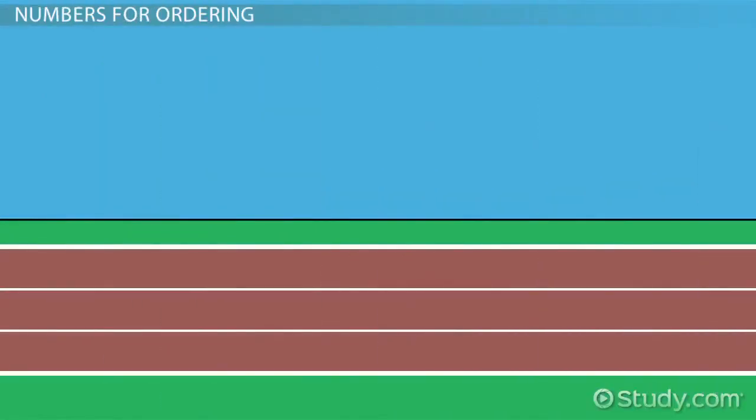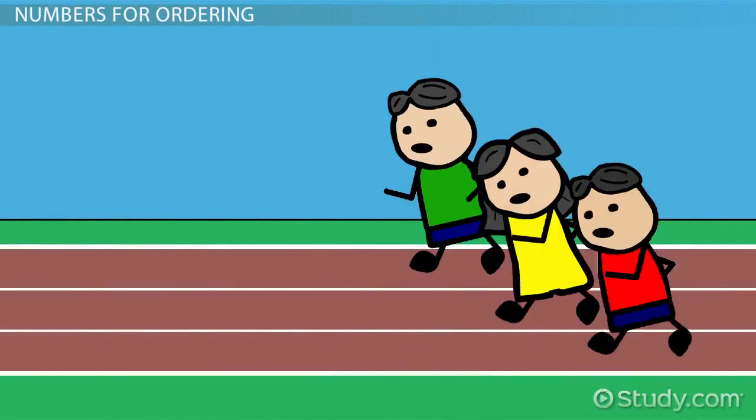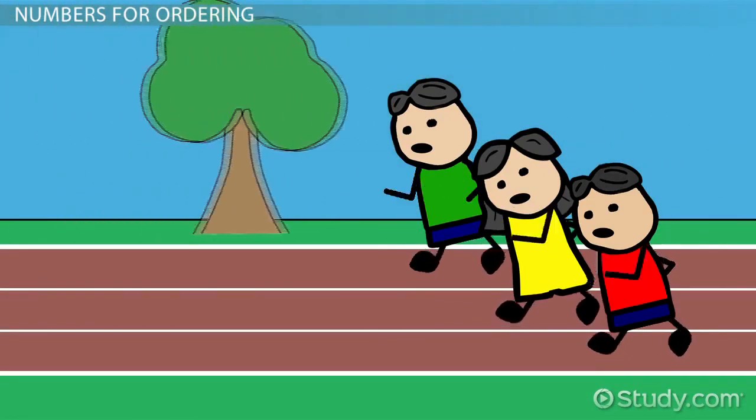Let's say there's a race between Joe, Sue, and Bob. You want to know in what order they finished. Suddenly, our cardinal numbers fail us because we're not asking how many runners there are. We're asking for what order they finished in.